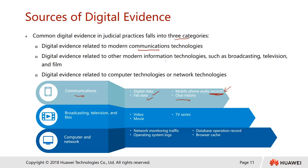The second category is digital evidence related to other modern information technologies, such as broadcasting, television, and films — for example, recorded videos, movies, TV series, or news broadcasting channels that published certain information. The third category is digital evidence related to computer or networking technologies, such as operating system log files, event viewers, network monitoring traffic, data operation records, browser cache, and cookies.